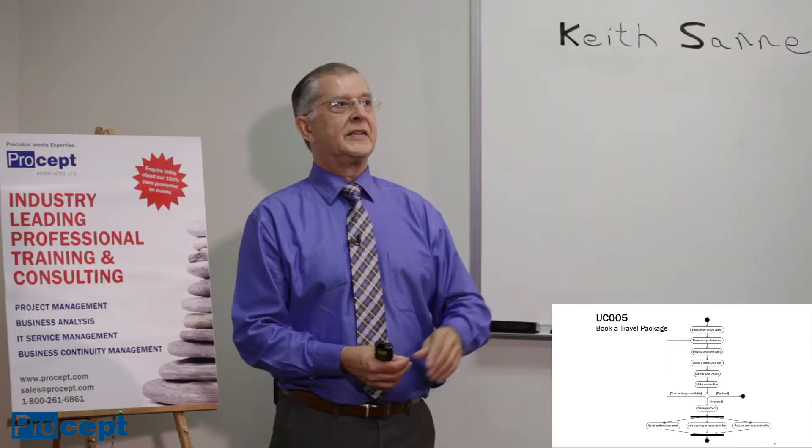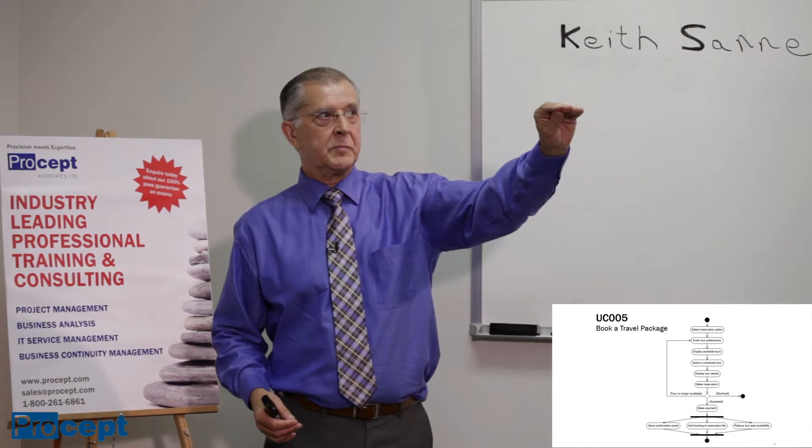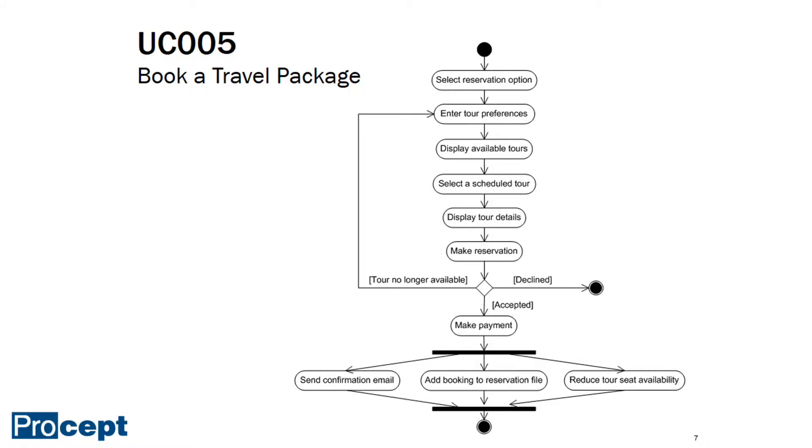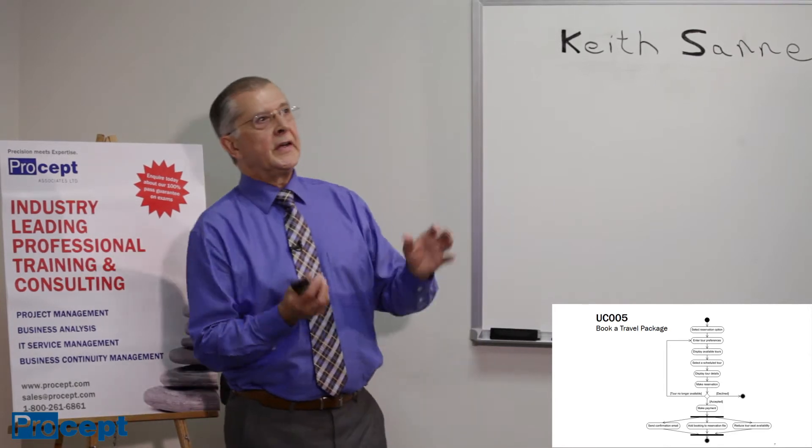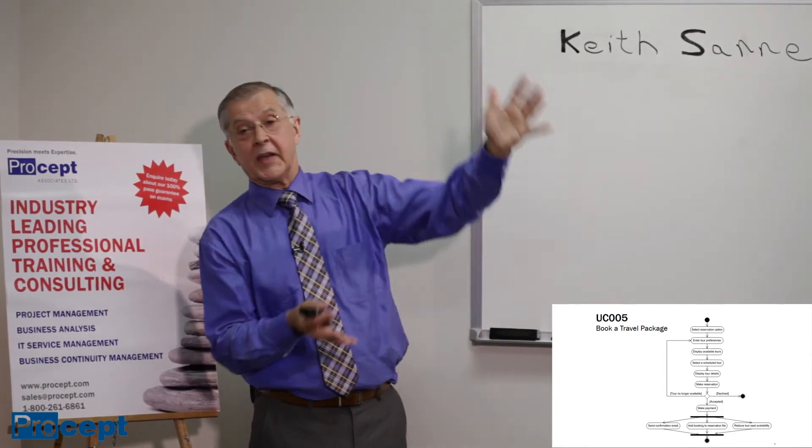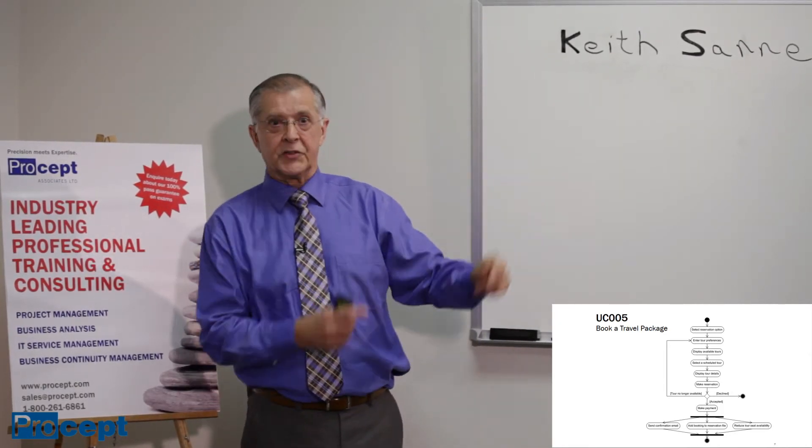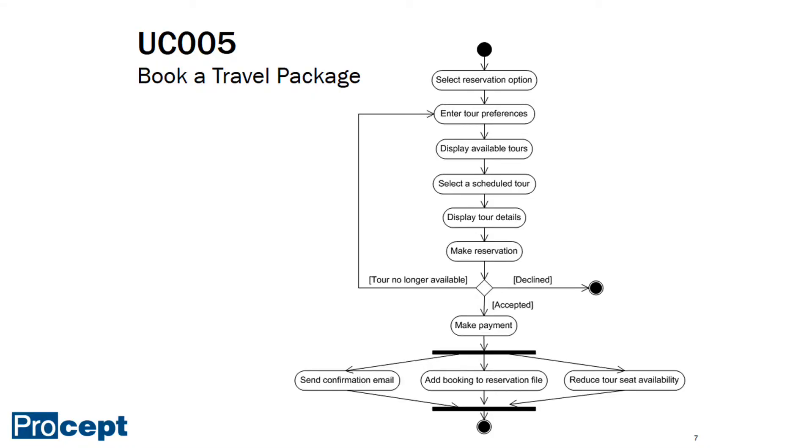After that, three different activities are listed: send confirmation email, add booking to reservation file, reduce tour seat availability to avoid multiple bookings or conflicts. After those steps are completed, we now join. That is the second synchronization bar. Those flows go into that second bar and the join is complete, and we can proceed with the next steps.